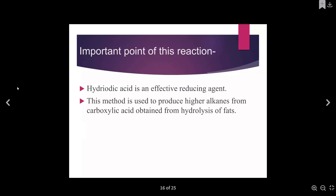What are the importance of this reaction? Hydroiodic acid is a very effective reducing agent and is used in this reaction. This method is used to produce higher alkanes from carboxylic acids, often from hydrolysis of fats. We mostly use these reductions of aldehyde, ketones, and alcohol in producing higher alkanes — those with higher molecular weights.